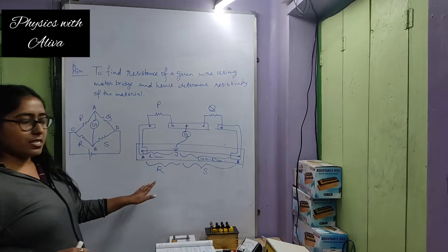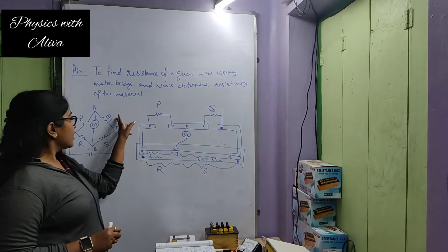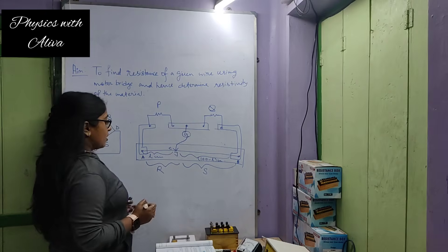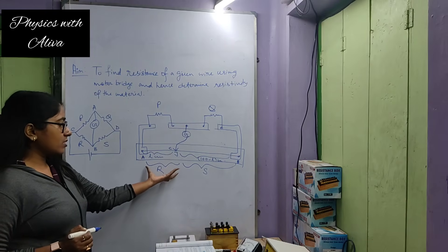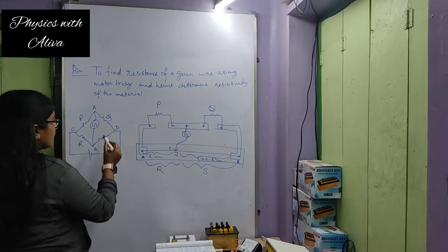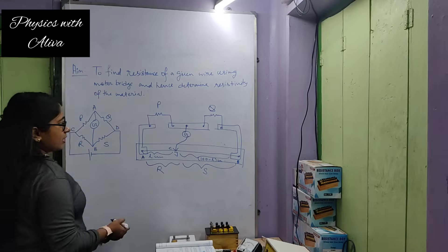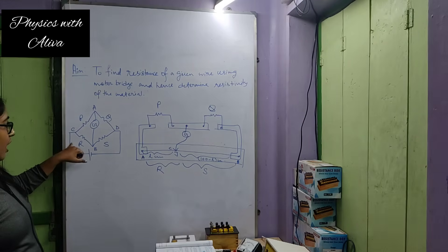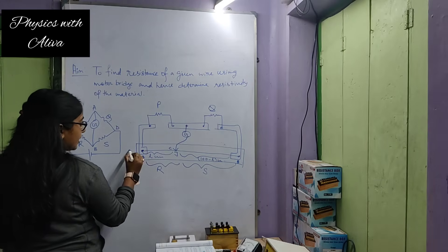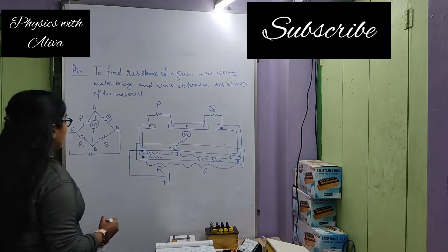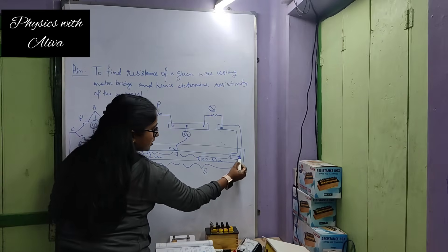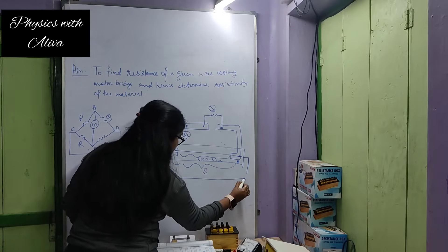Here we can see four resistances. Number 1 is P, number 2 is Q, number 3 is resistance R — the AC length of the wire — and CB wire is resistance S. The galvanometer is connected between A and B junction, and the battery is connected between P-R and Q-S junctions. We connect the positive end of the battery at the P-R junction and the negative end at the Q-S junction.